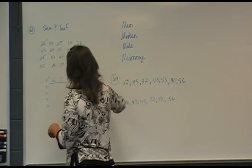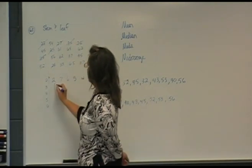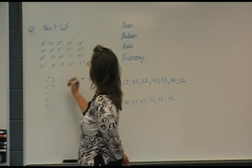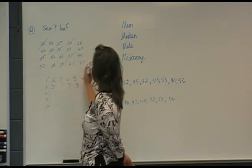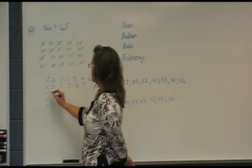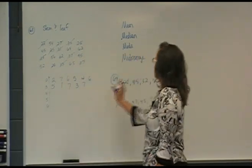Then we do the same thing for each number. So three, and we go into this 35, 31, 37, 33, 37. And for the fours, and I'll stop there, but that's the idea for stem and leaf.